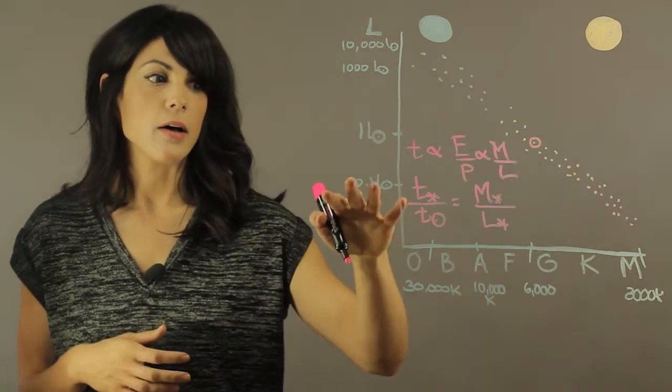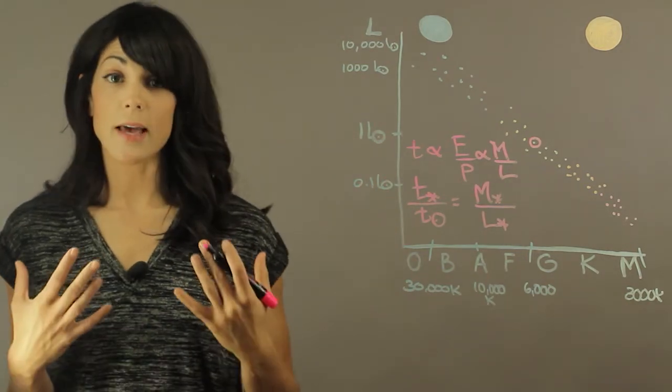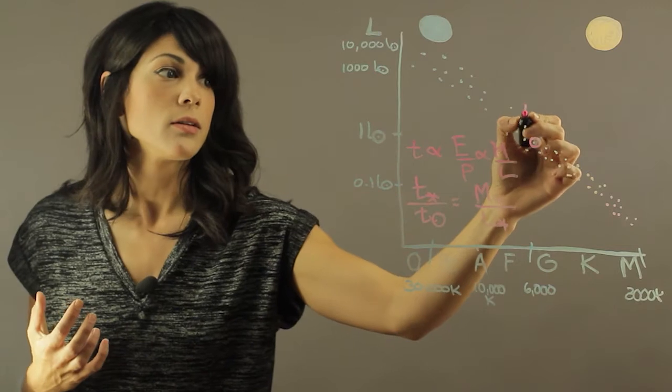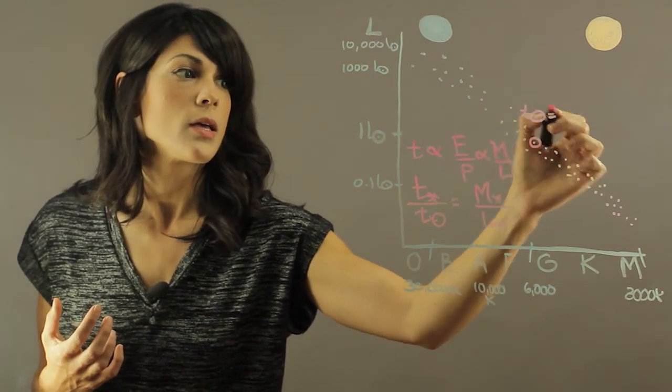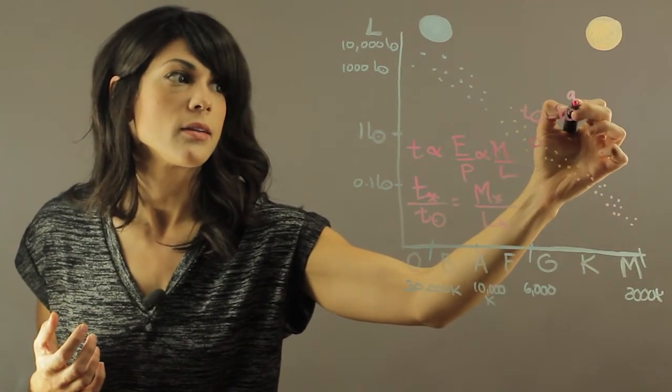So now, if you look at something, the life expectancy of the sun is 10 to the 9 years.